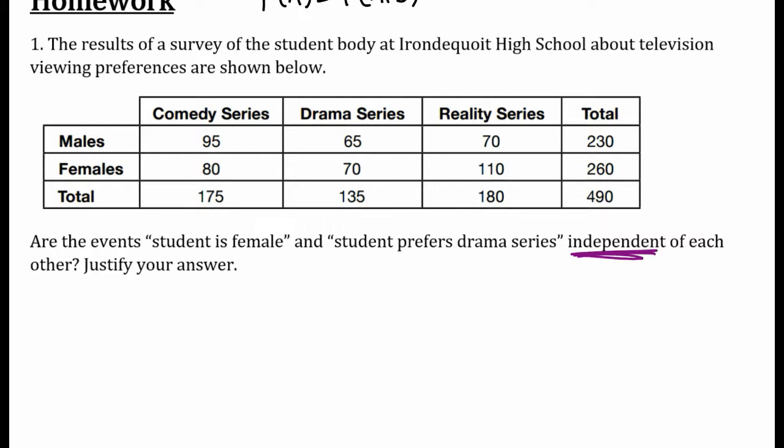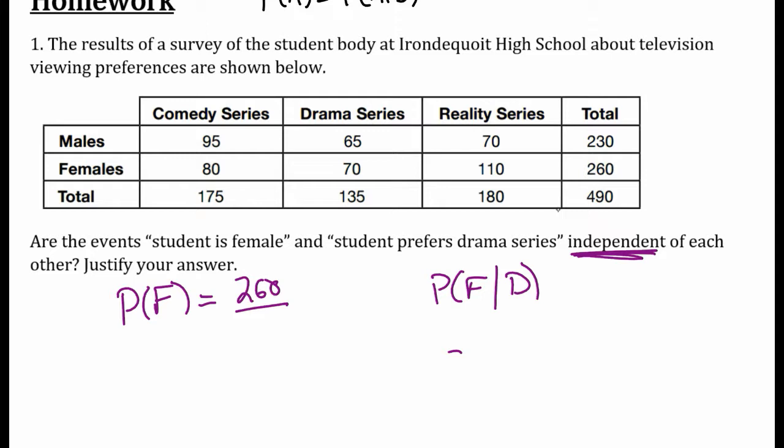So there are a couple things you can compute here. I'm going to compute the probability of female, and I'm also going to compute the probability of female given they like drama. The probability of randomly selecting a female from this survey: female is 260, so we have 260 over the 490 people that were surveyed.